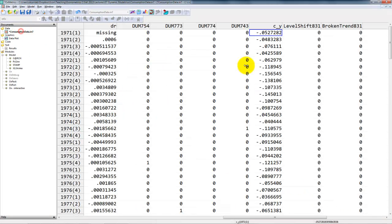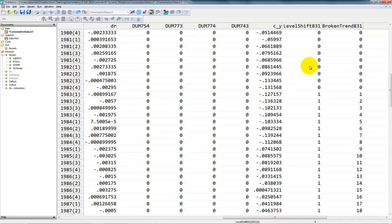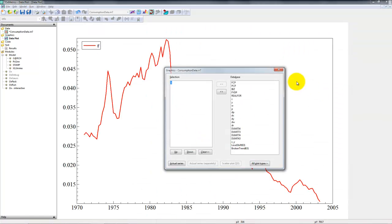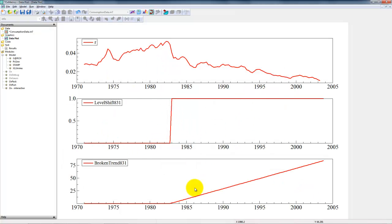And now the dataset has these two new variables. See that the level shift takes on values 0, then starting at 83-1, we have 1. The broken trend is just accumulated level shift. And there we have this broken trend starting at 83-1. We can plot them, level shift and broken trend separately. And this is exactly what the variables look like.